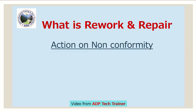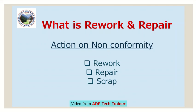What is rework and repair? Action on the non-conforming product is called rework and repair. Three actions are possible on the non-conforming product: 1. Rework, 2. Repair, 3. Scrap. Rework and repair have a direct impact on customers or end users. It results in an increase in customer warranty and market failures.